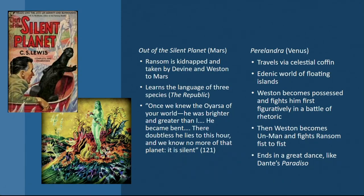There is a green floating lady—the Eve character—whom Ransom tries to understand. Weston then intervenes in Perelandra, but he has become fully possessed by the bad Eldils he was inviting in Out of the Silent Planet. Lewis shows that bad ideology becomes possession and unmans you—making you less than human and moving you toward nihilism and away from being. Yet the novel ends on a note of hope as the green lady is united with her Adam in a beautiful dance, much like Dante's Paradiso.